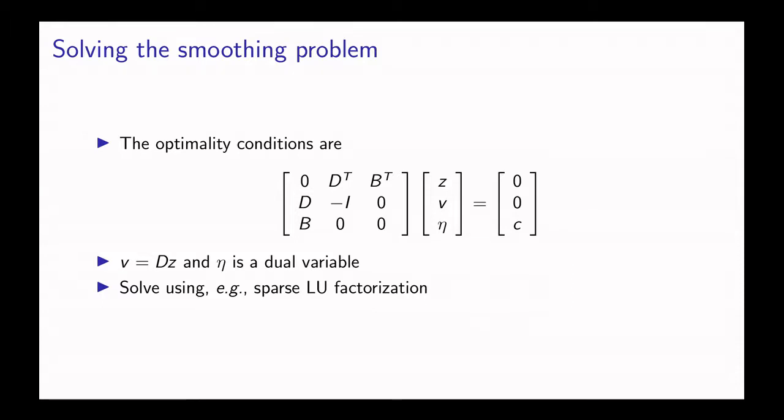Due to the construction of this linear system, it's very sparse. There are many ways you could solve this linear system, but what we're going to do is solve it using a sparse LU factorization. We factorize the matrix on the left and then use that factorization to do a back solve on the right hand side.